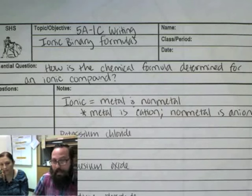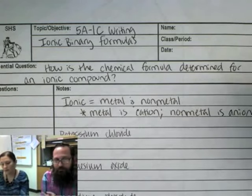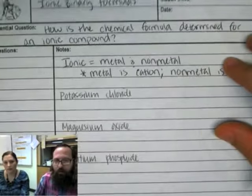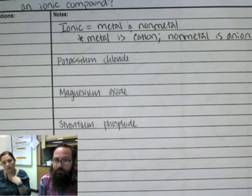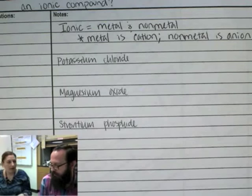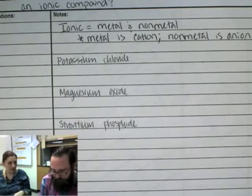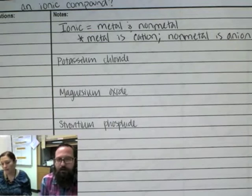So we're going to give you a name, and you're going to have to write out the formula from the name, because you just practiced doing it backwards. So this is the opposite of that last bit of 5A1A. So whenever we have ionic bonds, we have something that's a metal, a cation, and a nonmetal, an anion.